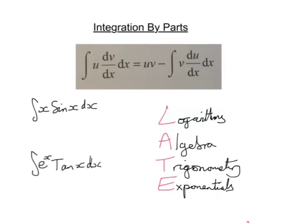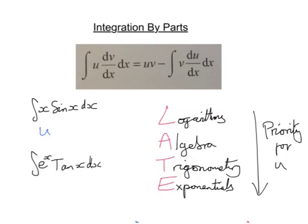The idea is then, this is your priority for u. So in our example, the first example, we've got an x, which is algebra. Algebra is anything like x, x squared, 2x plus 3, whatever it might be. And we've got sine, which is obviously trigonometry. So algebra comes before trigonometry, so algebra is where we're going to put our u. So this part is going to be the u, and this part is going to be the dv by dx.